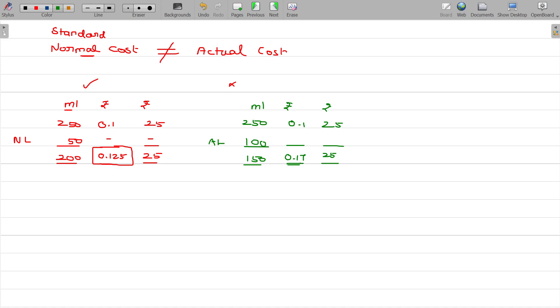Now, is it advisable to charge this way? 0.125 is normal. I will pay you only based on the normal cost, not the abnormal cost. That's the difference. 250 ml and 0.1 and 25. Now, actual loss is 25 ml.